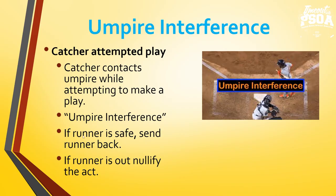The second type of umpire interference is when the catcher attempts to make a play and contacts the umpire while attempting that play. Umpires, you are going to voice and point at yourself saying 'umpire interference.' If the initial throw does not retire that runner, we call time — that's umpire interference, and we send the runner back to the base they were at at the time of pitch. If the runner is out, that nullifies the act of umpire interference and we do not have to call time. A lot of times it's an inside pitch and the catcher rears back and hits our chest or face mask — that's umpire interference as soon as they make contact. The ball remains live until that initial throw does not retire the runner.